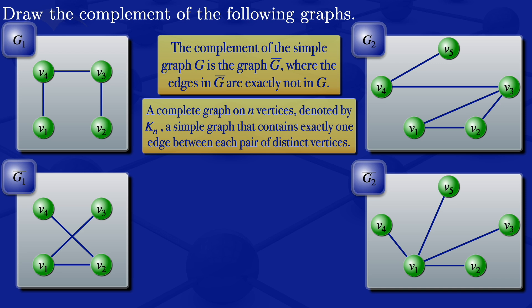Look at edges where we have V2: V2 with V1 is already there, V2 with V3, V2 with V4, V2 with V5. Then edges where we have V3: V3 with V1 is already there, V3 with V2 is already there, V3 with V4, then V3 with V5. Then edges where we have V4: V4 with V1 is already there, V4 with V2 is already there, V4 with V3 is already there, then V4 with V5. What we are now having is a complete graph with 5 vertices.